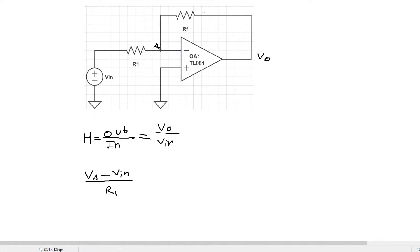But there also flows a current from A to this point of the circuit. So we have this term as well: VA minus VO divided by RF. And this equals zero. And this is just Kirchhoff's current law.